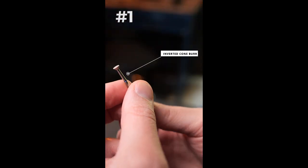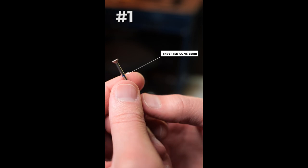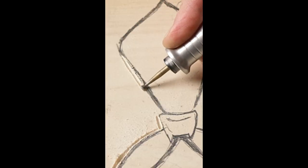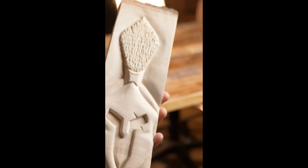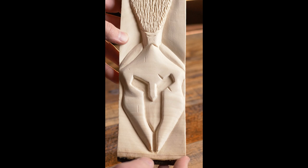And number one, my favorite burr of all time, the Inverted Cone Burr. This is great for carving straight lines, for cleaning up messes, for getting in the intricate details. And I could go on. I use this on every single carving.